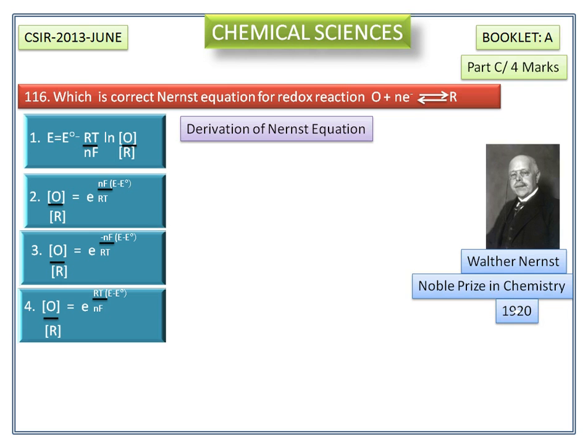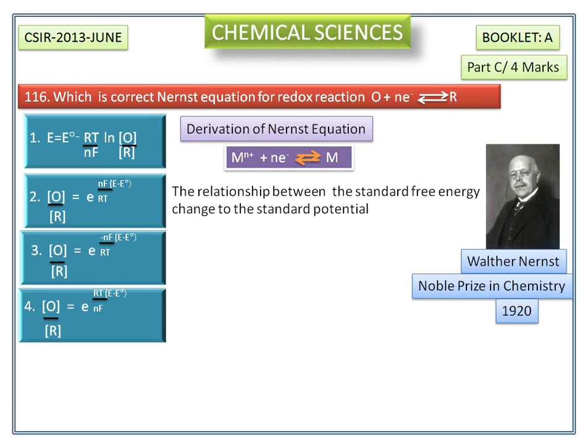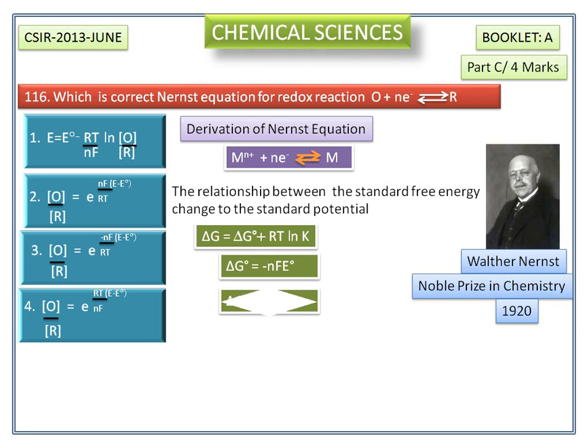He is also known for developing the Nernst equation. Let us consider this reversible redox reaction. The relationship between the standard free energy change to the standard potential starts from van 't Hoff Isotherm equation. ΔG° is equal to -nFE° and ΔG is equal to -nFE.